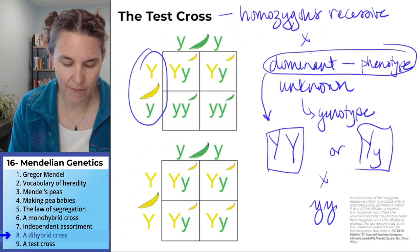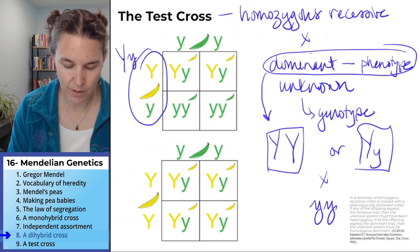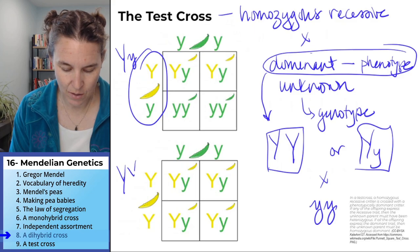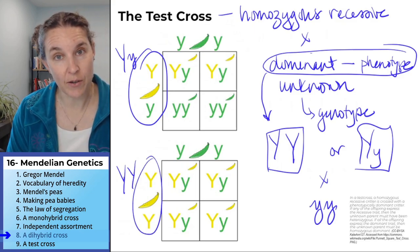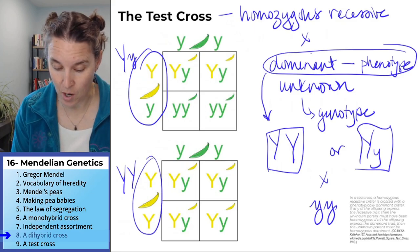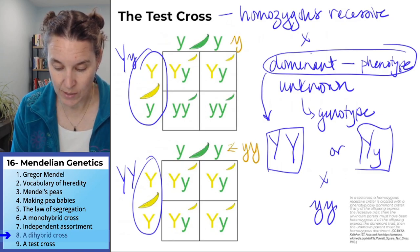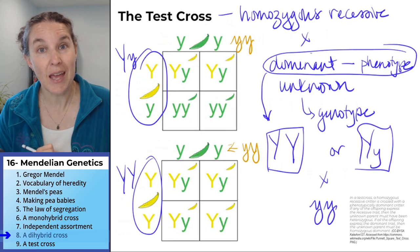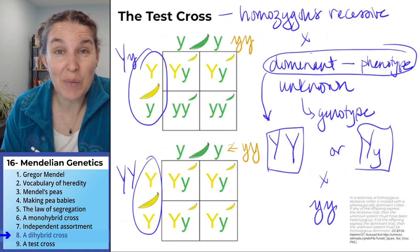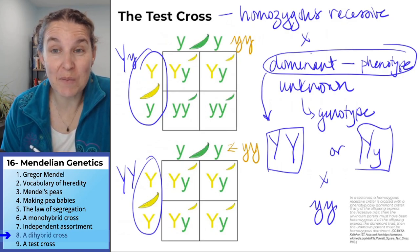Here we have a heterozygote. Here we have a homozygote. Both of them are crossed with a homozygous recessive. All we did is a Punnett square. We threw some gametes in there.